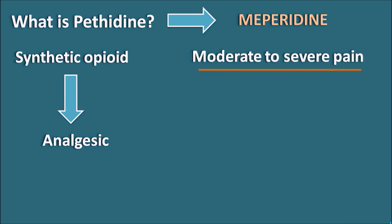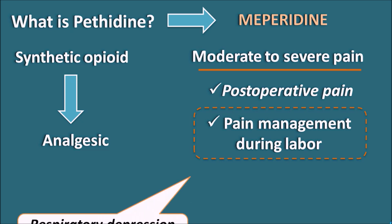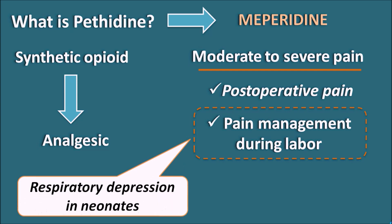Pethidine is used to control moderate to severe pain, particularly in postoperative pain as well as pain management during labor. It can be given to control pain during labor, where there is a chance of distribution of the drug into the placenta, thereby producing adverse effects in neonates, including respiratory depression.